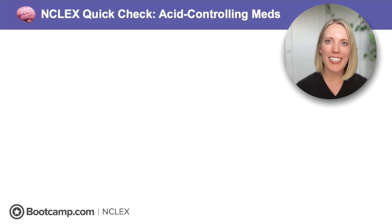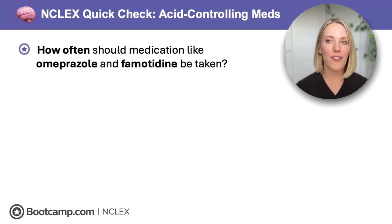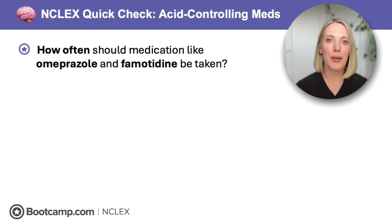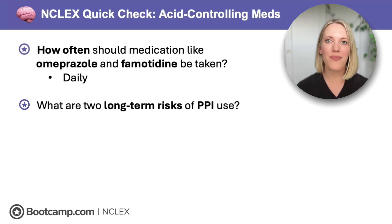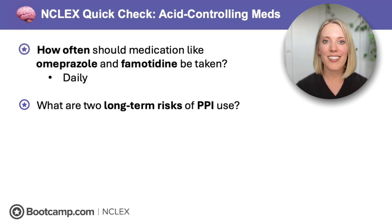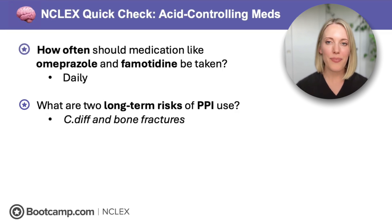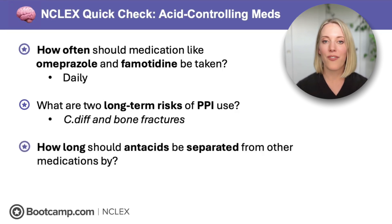NCLEX quick check: How often should omeprazole and famotidine be taken? Omeprazole is a PPI and famotidine is an H2 receptor blocker — both used for chronic conditions like GERD and peptic ulcer disease, so these are taken daily, opposed to antacids which are taken as needed. What are two long-term risks associated with PPI use? Altering gastric acid levels leads to increased risk for C. diff and bone fractures. How long should antacids be separated from other medications? At least one hour, because neutralizing gastric acid can impair absorption of other medications.